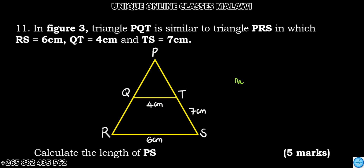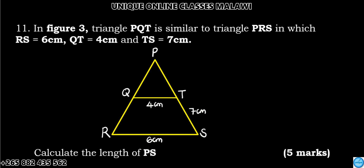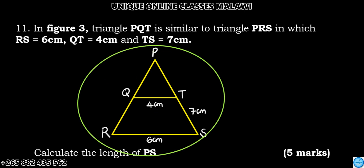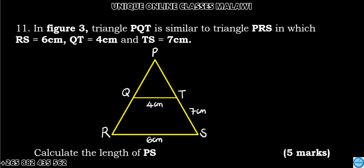Let's see the solution of Question number 11. In figure 3, triangle PQT is similar to the whole triangle PLS, in which AC is 6 centimeters, QT is 4 centimeters, and TS is 7 centimeters. We have been asked to calculate the length of PS.